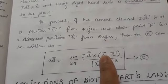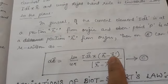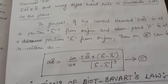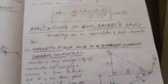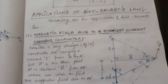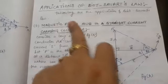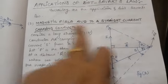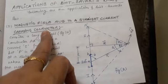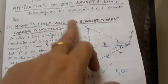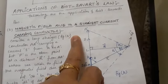Here R is the distance of the observation point, and R-dash is the distance of the current element from the origin. Now let us go to the applications of Biot-Savart's law. The very first application is the magnetic field due to a straight current-carrying conductor — this is very important and will appear in your exams.